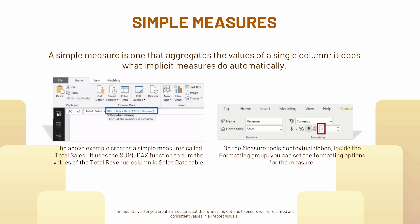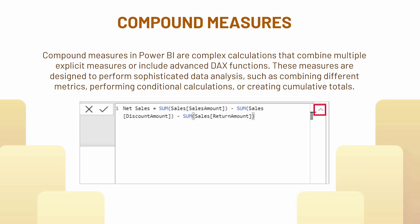Here is an example of a simple measure: if you want to calculate total sales, you use a DAX function with a field, and you can also change decimal places or currency type. I'll show you that in the demo. Compound measures are those where you use more than two measures — you can call other measures you've already created or use different DAX functions. For example, to calculate net sales you subtract the discount and return amount from the sales amount.